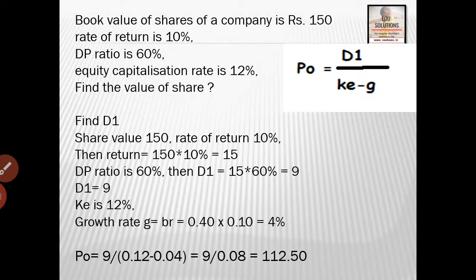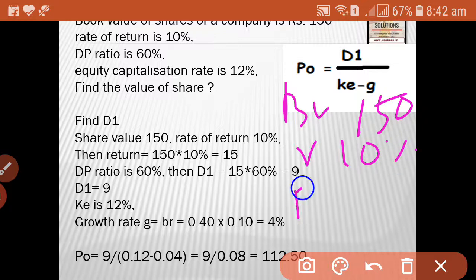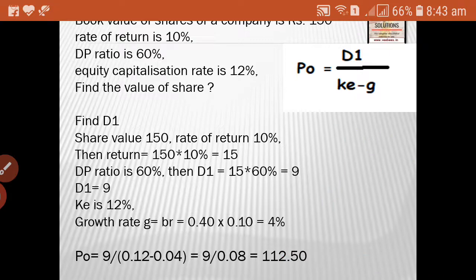Another question: The book value of shares of a company is Rs. 150, the rate of return is 10%, the DP ratio is 60%, and the equity capitalization rate KE is 12%. Should the person buy the share? We need to find the value of the share. We have been given KE only, so we need to calculate D1 and the growth rate G.